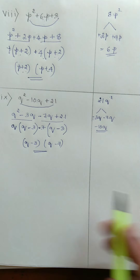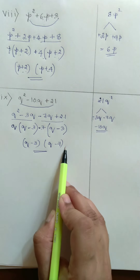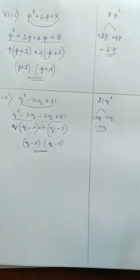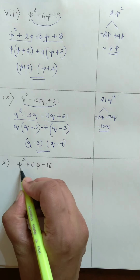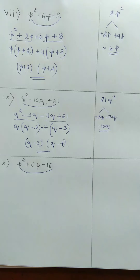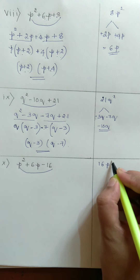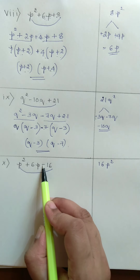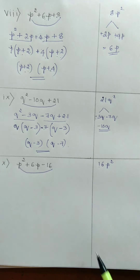The required factorization is Q minus 3 into Q minus 7. Next problem: P squared plus 6P minus 16. Consider the first and third terms, ignoring the negative sign, giving 16P squared. Now find the factors of 16.